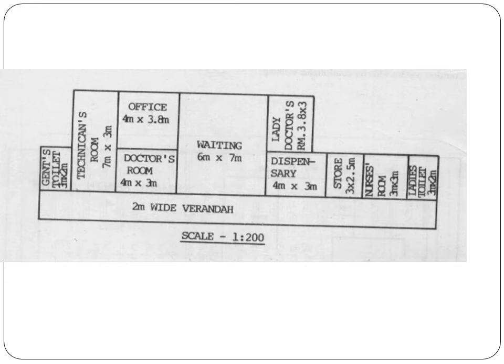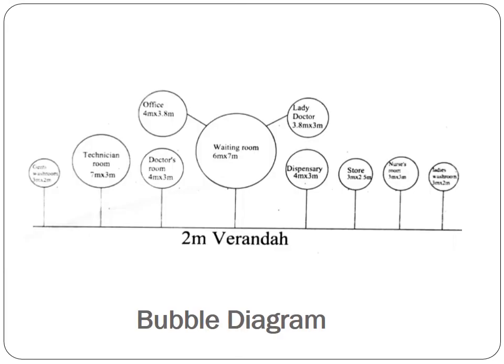From the veranda, connectivity is given to the waiting hall, where the waiting hall connects to the office, doctor's room, ladies doctor's room, and dispensary. The technician room, store, and nurse room are accessed directly from the veranda. The same layout is shown through a bubble connectivity diagram by calculating individual areas and diameters and plotting the different rooms in the form of circles.